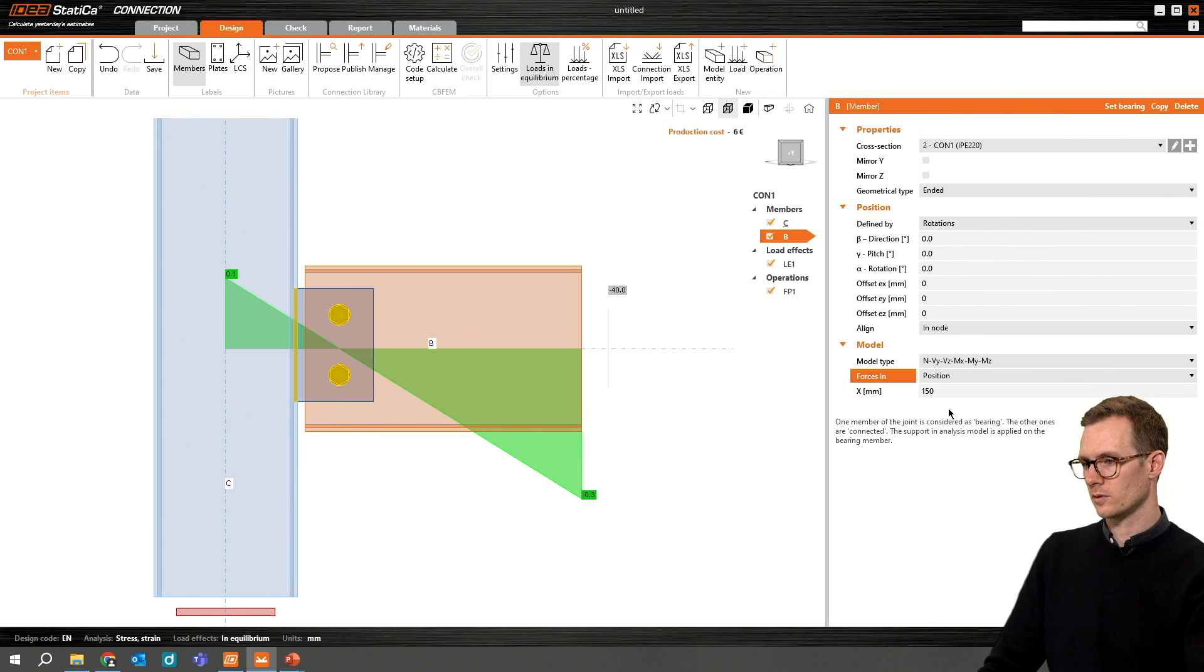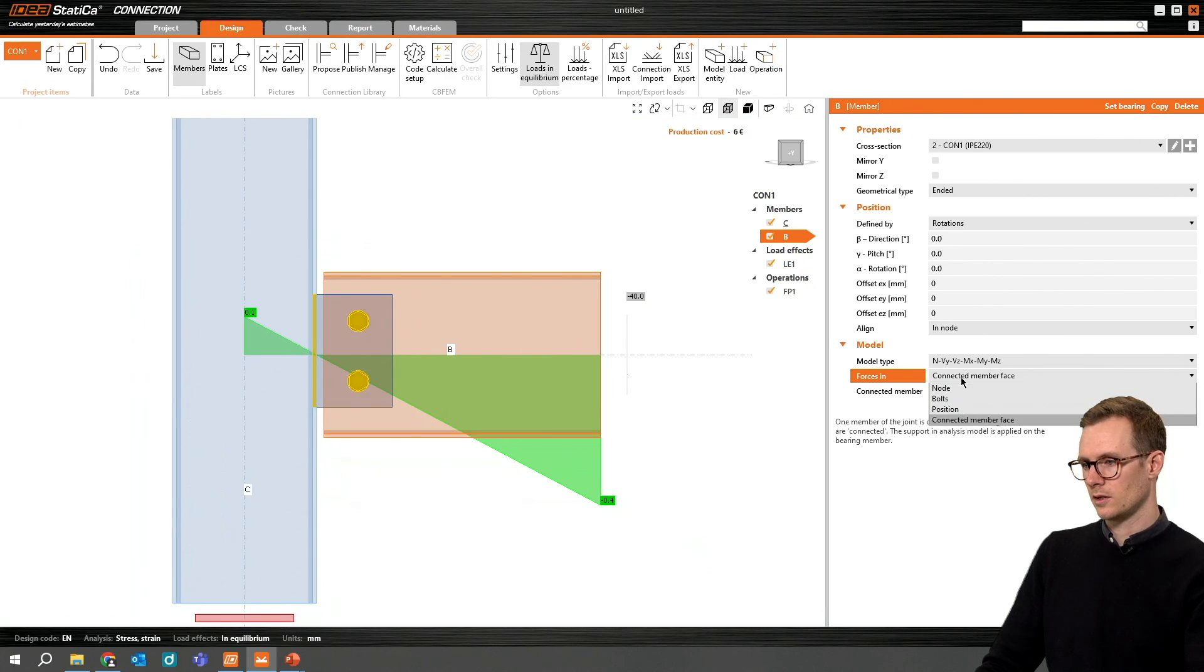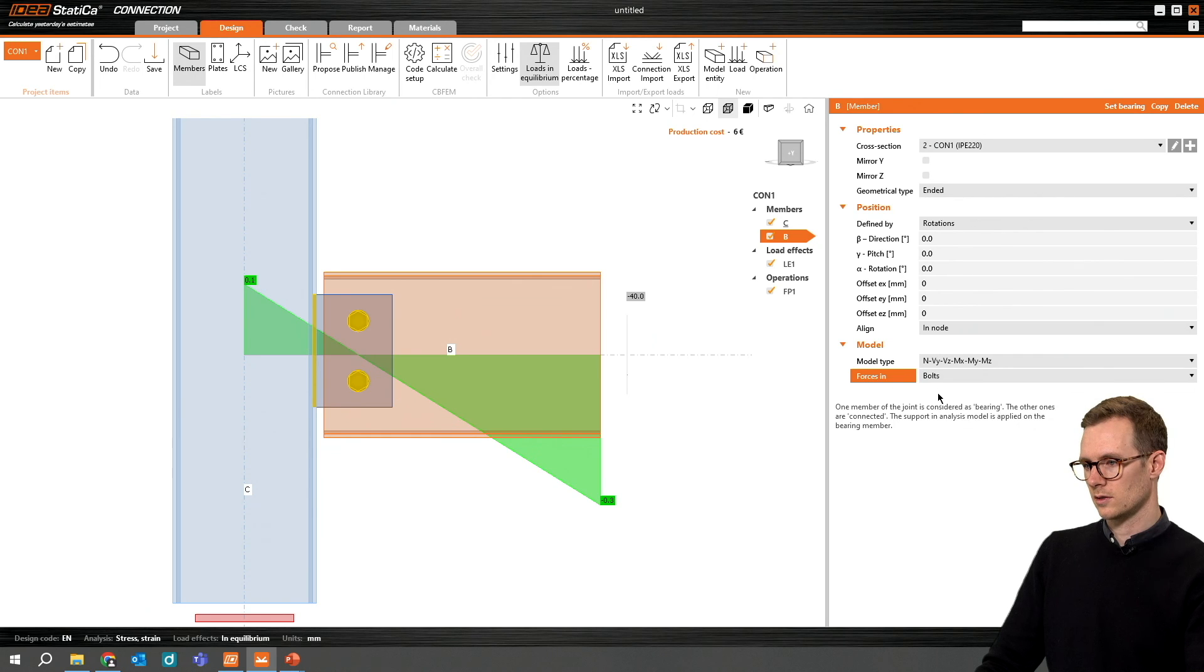And we can also choose the position and input the correct position. If you have a different kind of connection, you can choose connected member face. Then it will be in the face of the connected members. But in this case, bolts is the most used one.